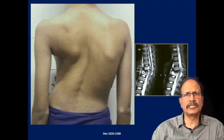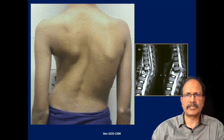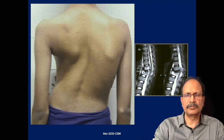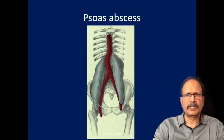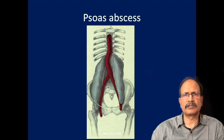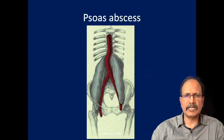You can see the deformity of the spine due to the compression fracture occurring as a result of the tuberculosis process. This is a diagrammatic representation of vertebral tuberculosis tracking on either side of the psoas sheath.